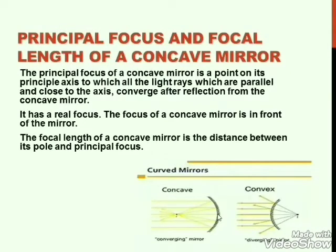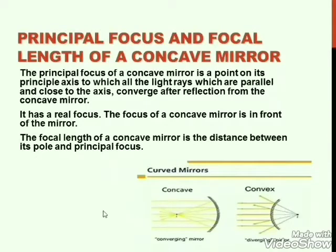Here we have a pole, and here is the focus. The principal focus of a concave mirror is a point on its principal axis. Principal axis is an imaginary line on a spherical mirror — we just imagine a straight line from a spherical mirror and name it as principal axis.